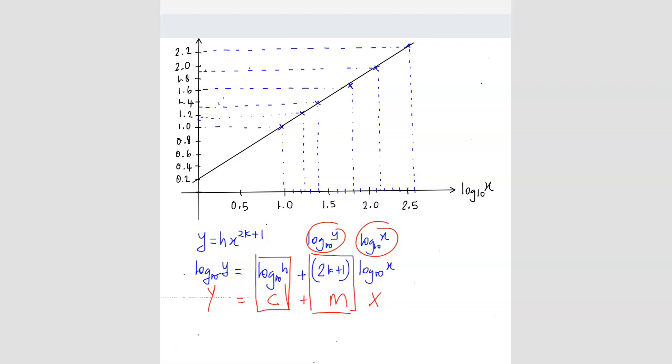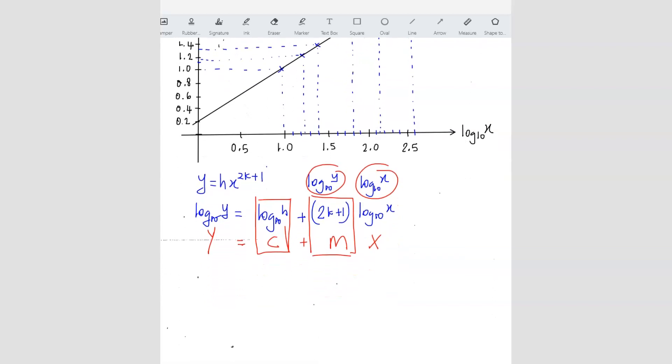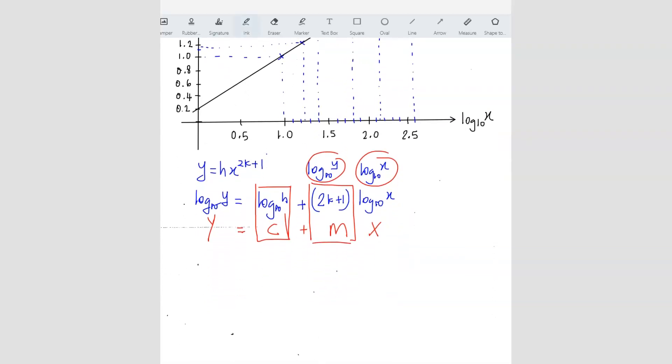So from the intercept here, based on our graph, our intercept here is like 0.2, right? But based on my actual graph that I found that I did by myself, I got 0.25. So I'm going to use 0.25. 0.25 equals to log h base 10.